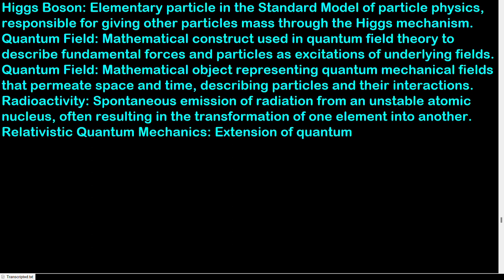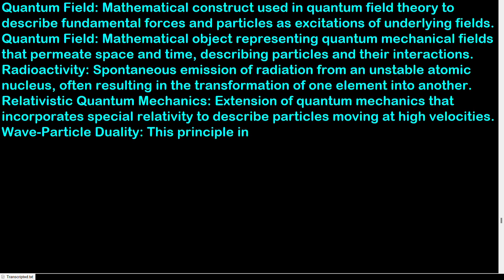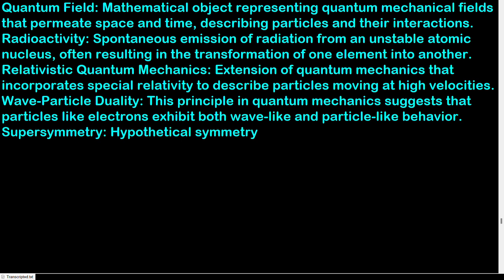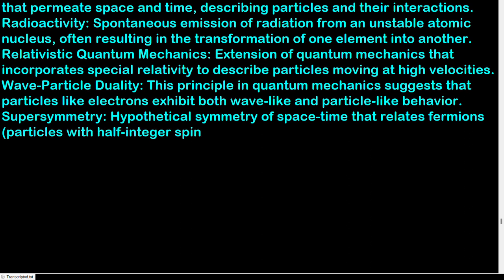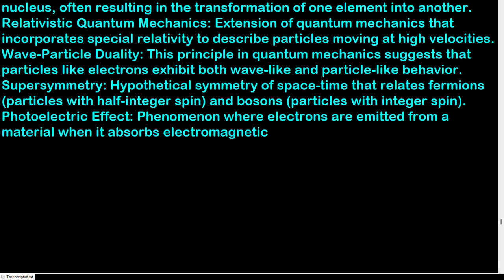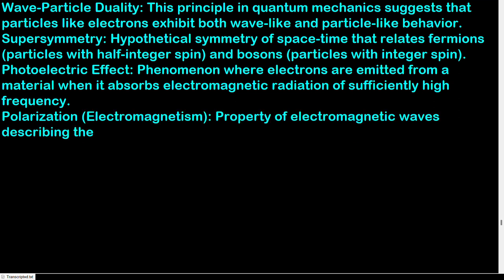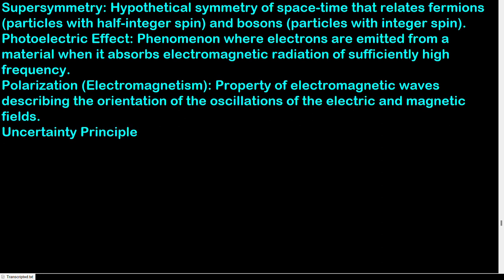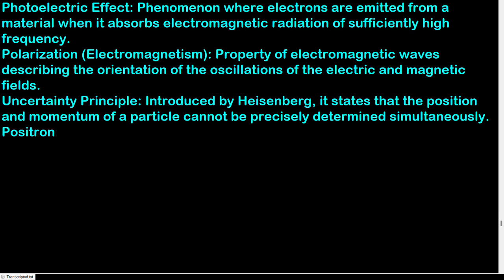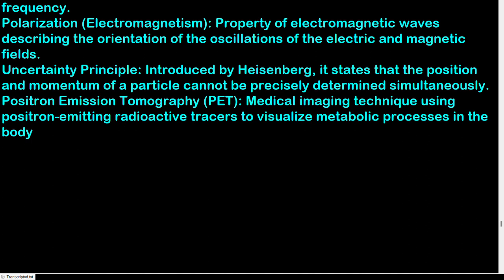Relativistic quantum mechanics: extension of quantum mechanics that incorporates special relativity to describe particles moving at high velocities. Wave-particle duality: this principle in quantum mechanics suggests that particles like electrons exhibit both wave-like and particle-like behavior. Supersymmetry: hypothetical symmetry of space-time that relates fermions (particles with half-integer spin) and bosons (particles with integer spin). Photoelectric effect: phenomenon where electrons are emitted from a material when it absorbs electromagnetic radiation of sufficiently high frequency. Polarization (electromagnetism): property of electromagnetic waves describing the orientation of the oscillations of the electric and magnetic fields. Positron emission tomography (PET): medical imaging technique using positron-emitting radioactive tracers to visualize metabolic processes in the body.